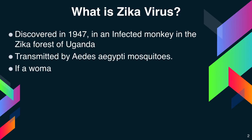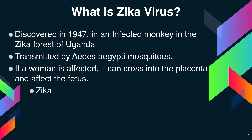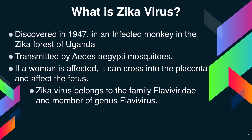If a woman is affected, the virus can cross through the placenta and affect the fetus. Zika virus belongs to the family Flaviviridae and it is a member of the genus Flavivirus.